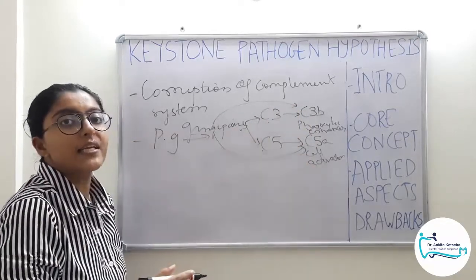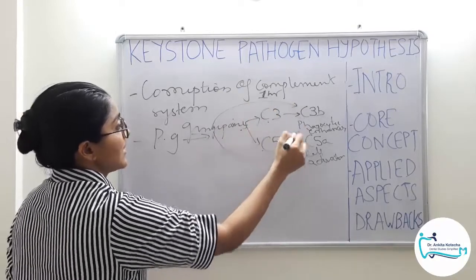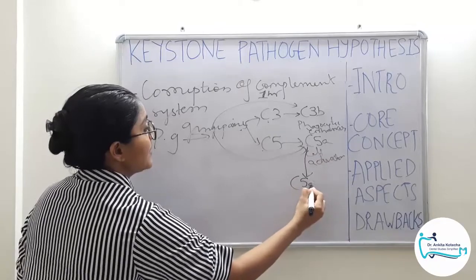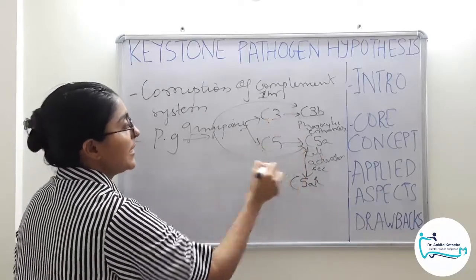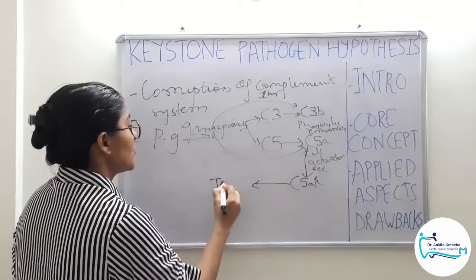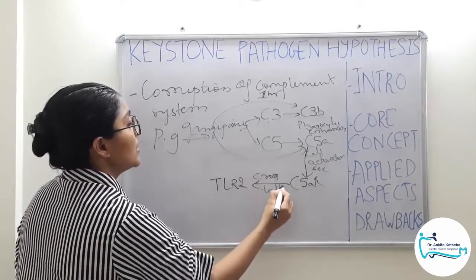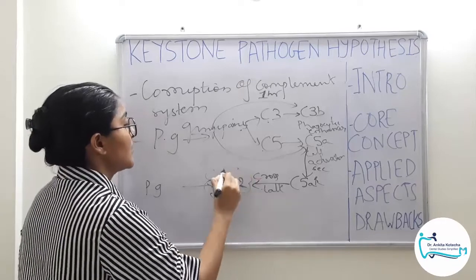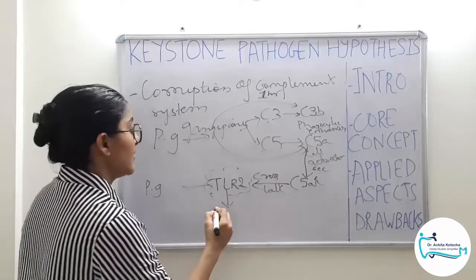An in vitro study showed it takes up to 1 hour for gingipains to cleave complement factors into active fragments and then degrade them. However, C5a interacting with its cell receptor C5aR on neutrophils takes only a few seconds. So, before undergoing degradation by gingipains, C5a sends signals to C5aR on neutrophils, which then enter into crosstalks with TLR2 — another Toll-Like Receptor. This TLR2 is already activated by P. gingivalis, so multiple crosstalks occur between TLR2, P. gingivalis, and now C5a receptor signals.